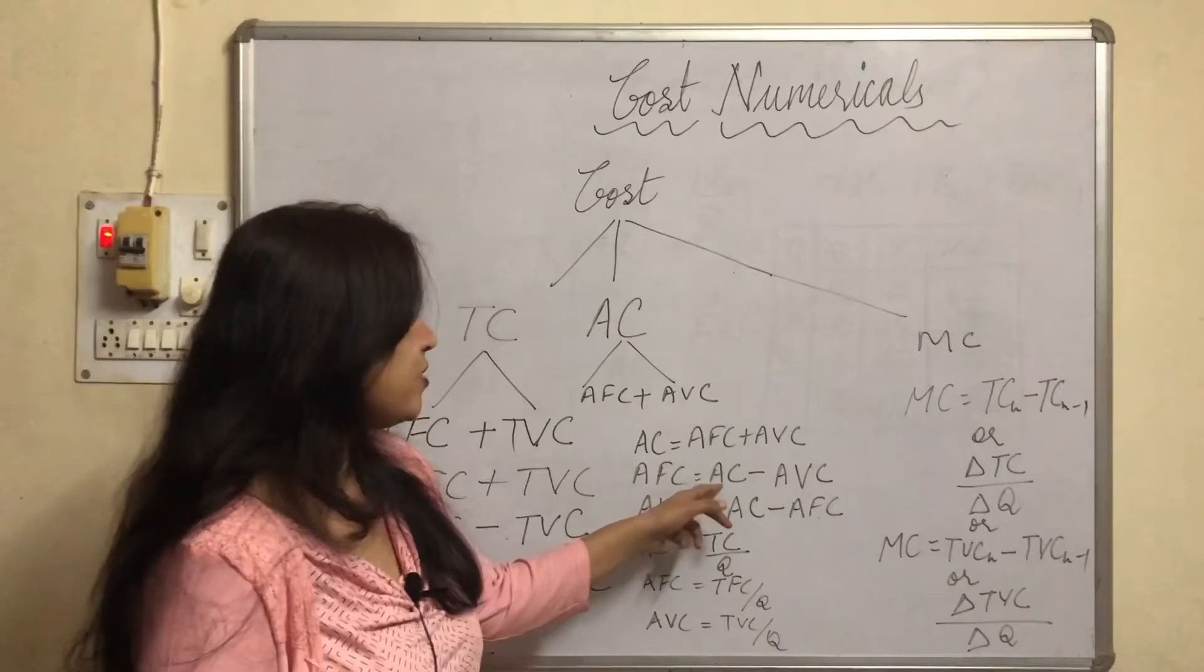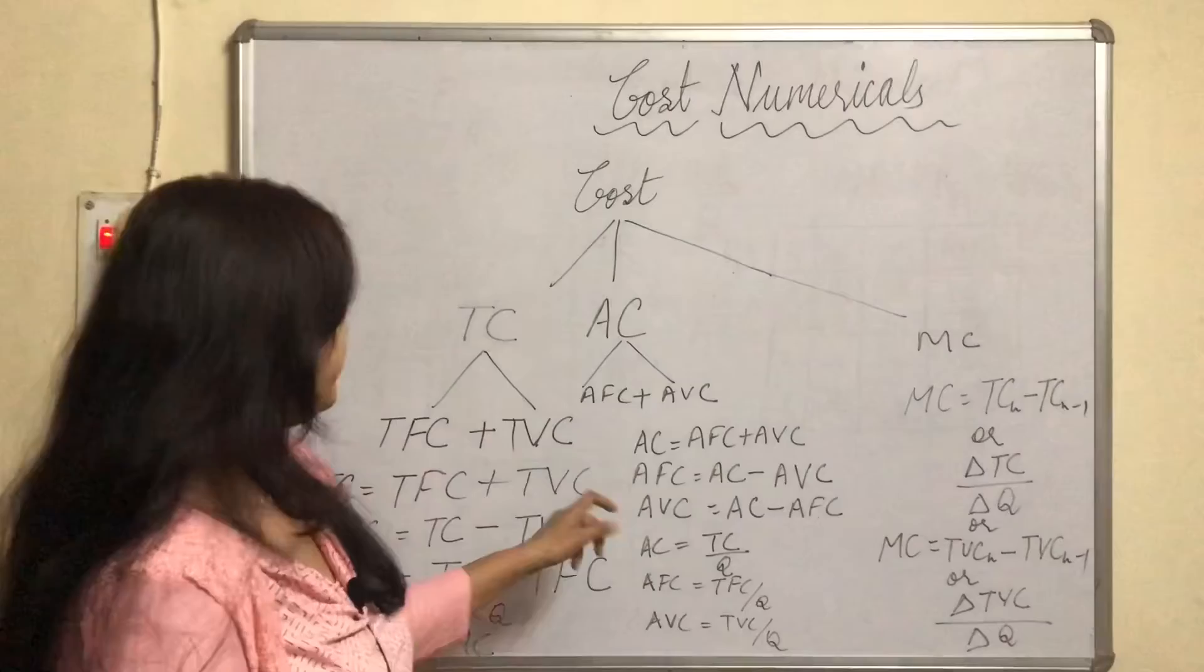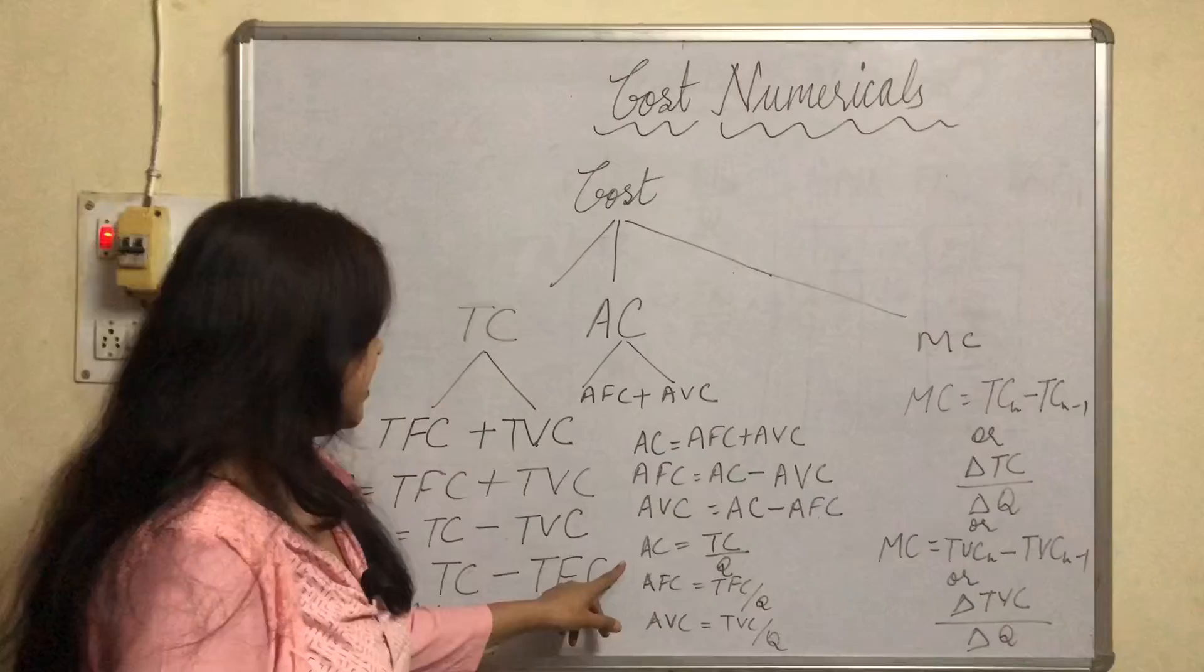we can have AFC equals AC minus AVC, like we have done in TFC or TVC. AVC equals AC minus AFC.